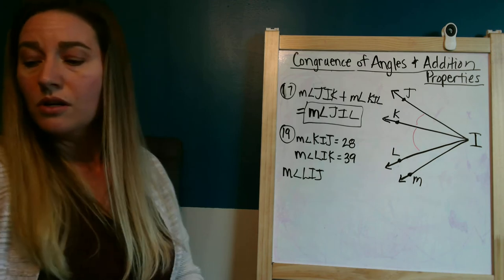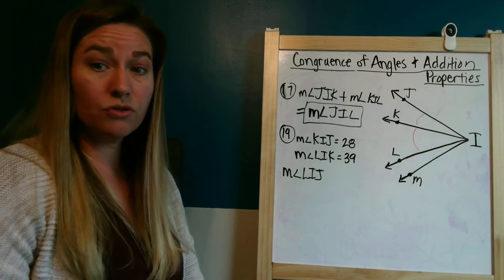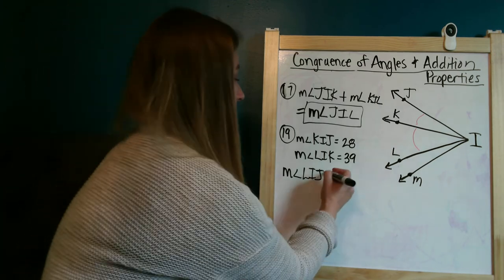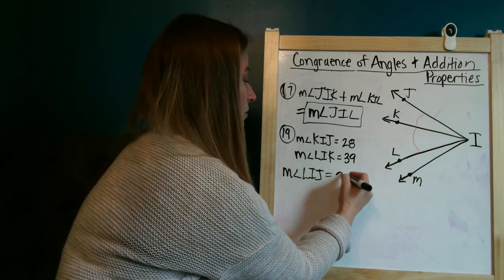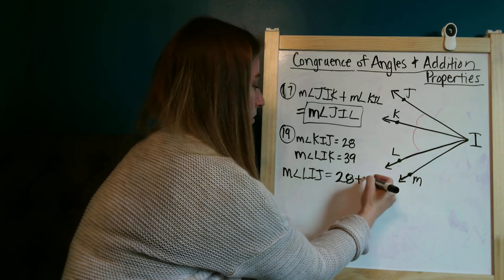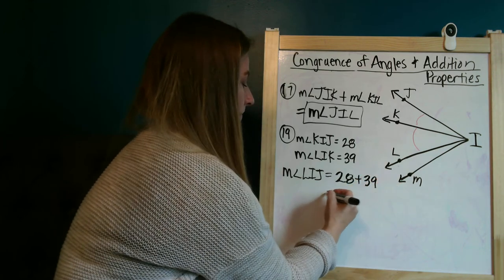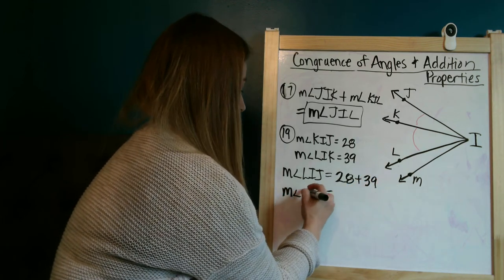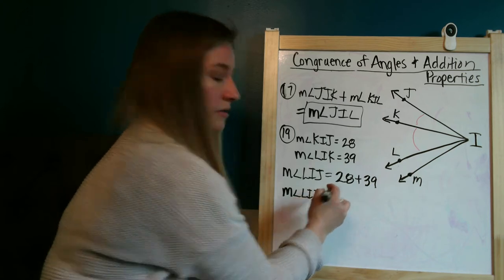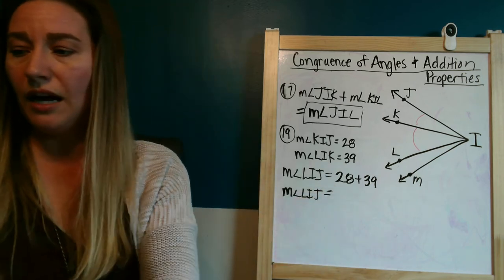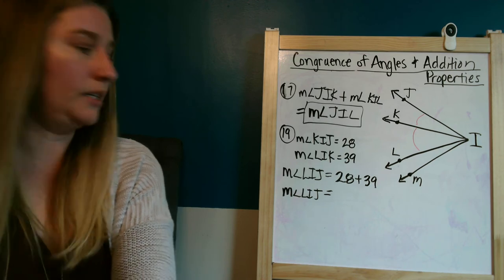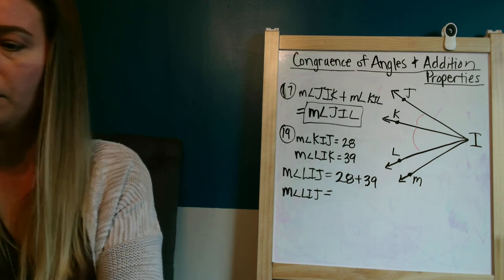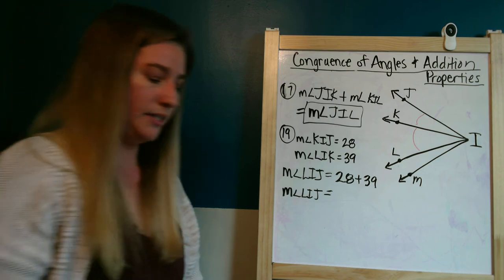So we are going to just take those two measures and add them together. That's going to, the measure of angle LIJ is going to be equal to 28 degrees plus 39 degrees. So the measure of angle LIJ is going to be equal to 67 degrees.